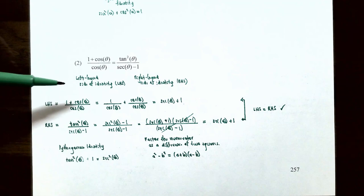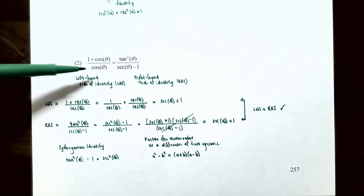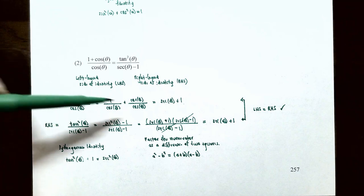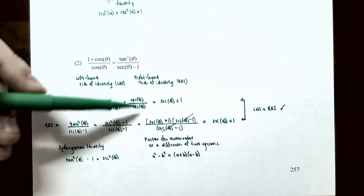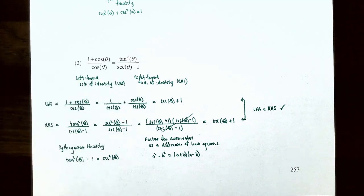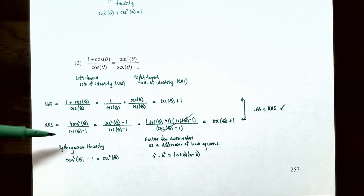Let's call the sides LHS and RHS. Starting with the LHS: (1 + cos θ) / cos θ. Rewrite this as two separate fractions with denominator cos θ: 1/cos θ + cos θ/cos θ. The first fraction is sec θ (reciprocal of cosine) and the second is 1. So the LHS simplifies to sec θ + 1. There is nothing more to simplify on the left, so now let's start with the RHS: tan²θ / (sec θ − 1). Note that tan²θ can be rewritten using the Pythagorean identity in terms of secant.